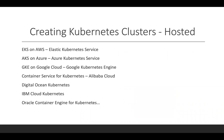Kubernetes clusters are hosted platforms already that we can see. Elastic Kubernetes Service is in AWS. Azure Kubernetes Service is in Microsoft Azure. Google Kubernetes Engine is in Google Cloud. Container Service for Kubernetes is in Alibaba Cloud. DigitalOcean is another public cloud provider that has a Kubernetes solution. IBM Cloud also has a Kubernetes solution. Oracle Cloud has an Oracle Container Engine for Kubernetes.